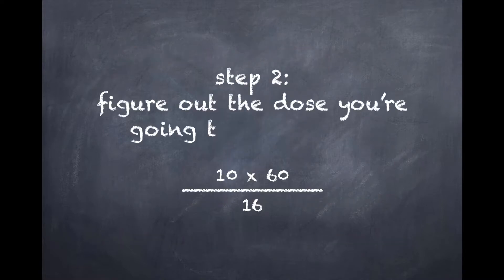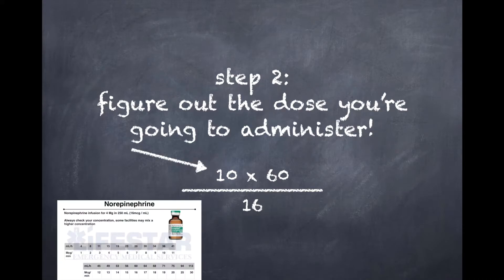So our second step is going to be to figure out the dose we're going to administer. And there's no real getting around this, you have to use a reference to double check your work. Even if you think you know the dose really well, for patient safety, always use a reference.